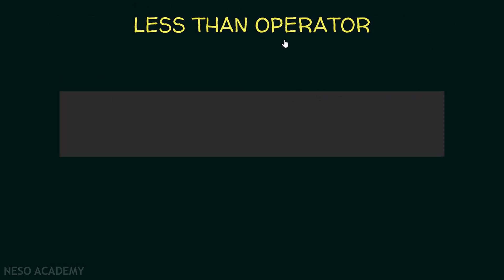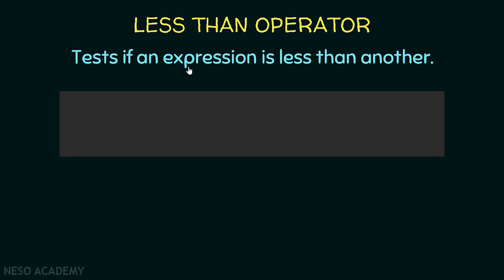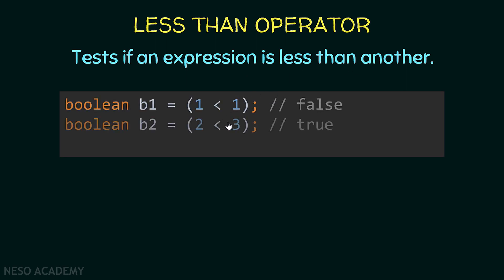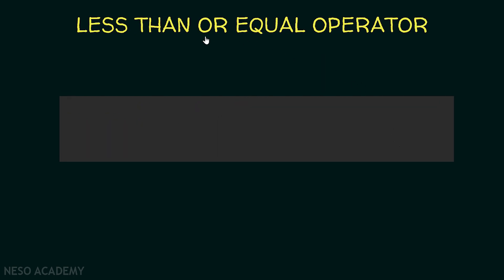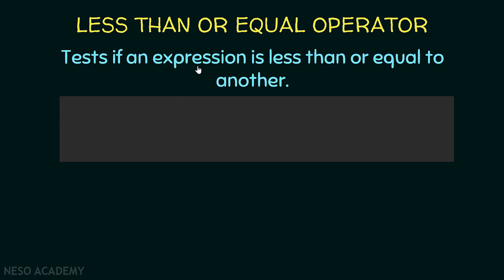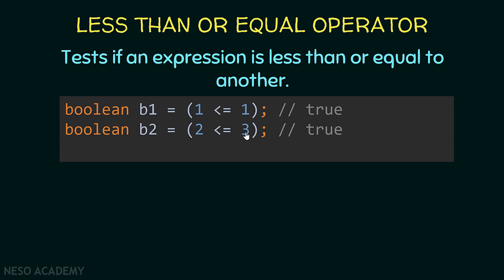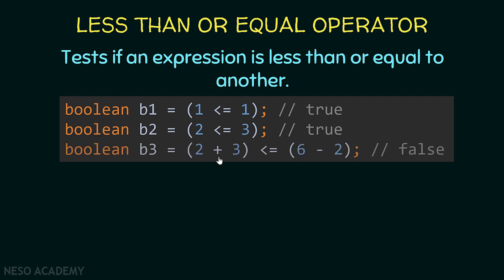Similarly we have the less than operator, used to test if an expression is less than another expression. One less than one is false. Two less than three is true. Five less than four is false. We also have the less than or equal operator, used to test if an expression is less than or equal to another expression. One less than or equal to one is true. Two less than or equal to three is also true. Five less than or equal to four is false.